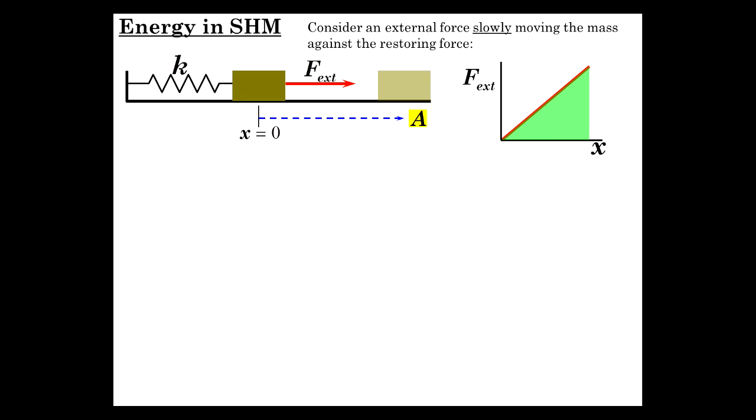Now what does the area under the graph represent? It's force times displacement, and that is work. So the external work done is equal to the area, which is the average value, one-half F external times x, and that's one-half kx times x, one-half kx squared. Now, work total is delta K, which is zero, because we're doing it slowly.